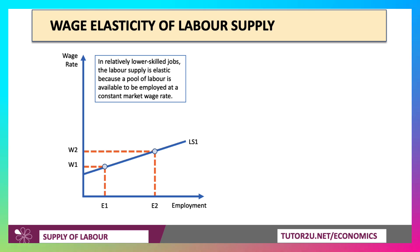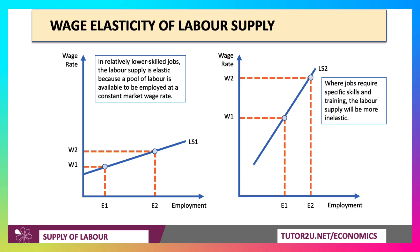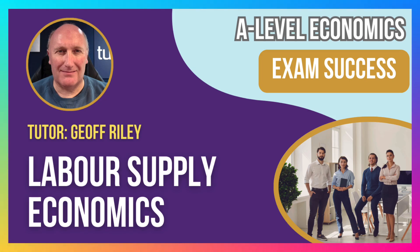In this diagram, a fairly elastic labour supply curve is drawn, which tends to be the case for relatively lower-skilled jobs — the pool of labour available is large even if the wage rate goes up a little. By contrast, an inelastic labour supply curve represents a job requiring specific skills, training, or qualifications, making labour supply more wage inelastic, certainly in the short term. That was a quick revision video on labour supply economics. Thanks.